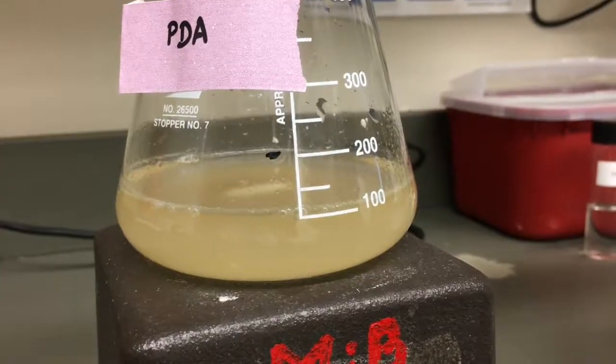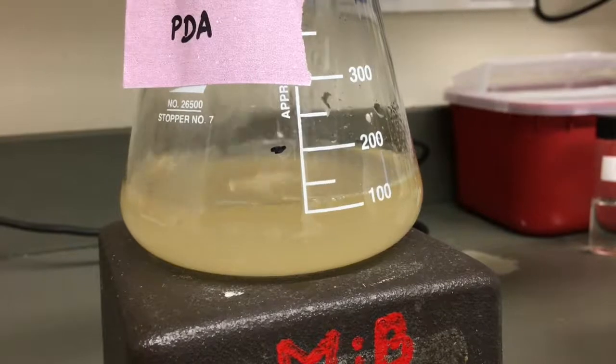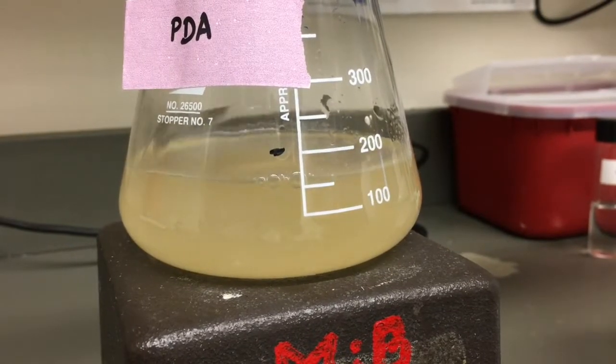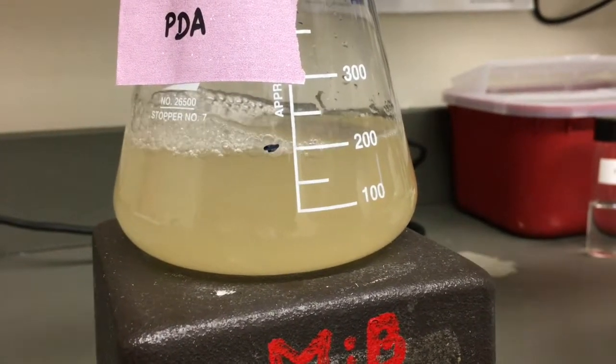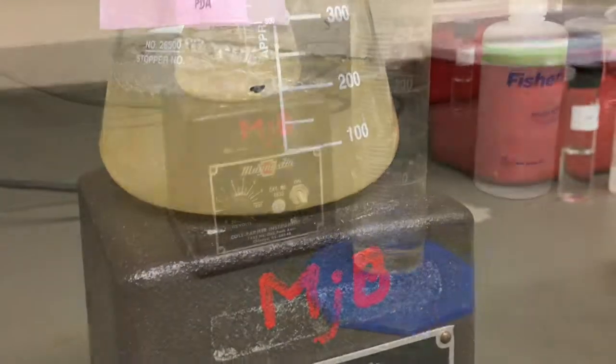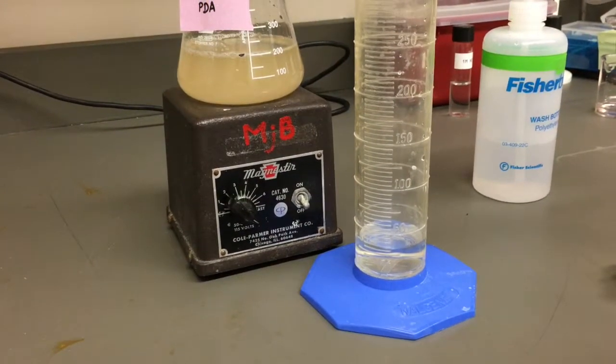Once all the powder has been added and dissolved in, add water to bring your solution up to the required final volume. If you had added the exact amount initially, you can see you would have a final volume larger than what was required and what you had calculated for.